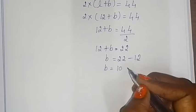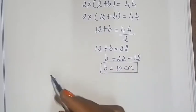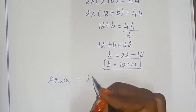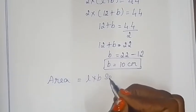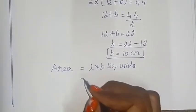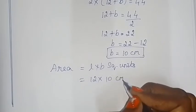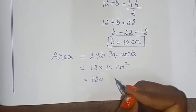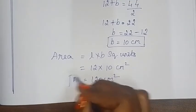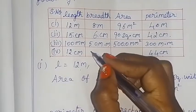Now we write the area. Area of the rectangle = length × breadth square units = 12 × 10 = 120 cm². So breadth is 10 cm and area is 120 cm².